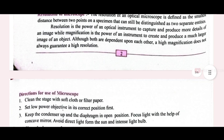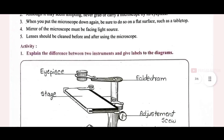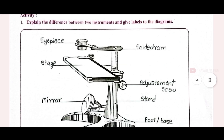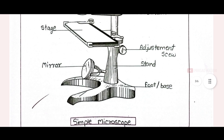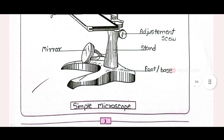On the second page it is also blank. On the third page we have a diagram of the simple microscope — we just have to name its parts and write the name of this microscope. These are the parts; you just have to label it neatly.